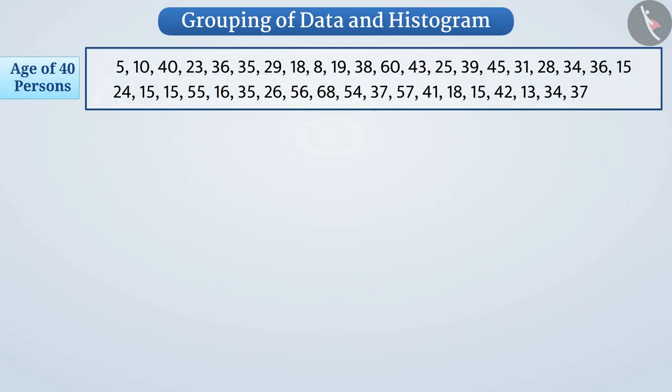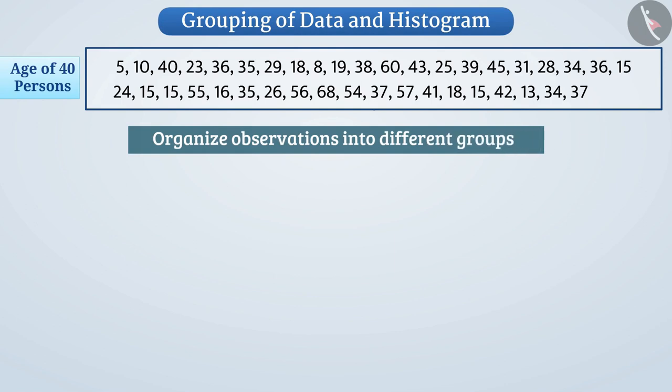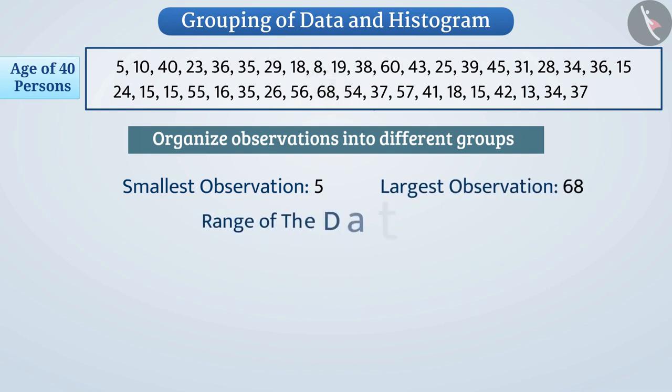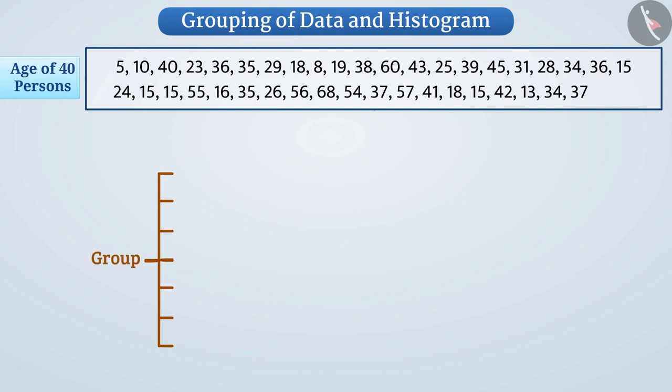In such a situation, we organize observations into different groups. Here, the smallest observation is 5 and the largest observation is 68. Therefore, the range of the data is from 5 to 68. So here we will create groups of observations like 0 to 10, 10 to 20, 20 to 30 and so on.